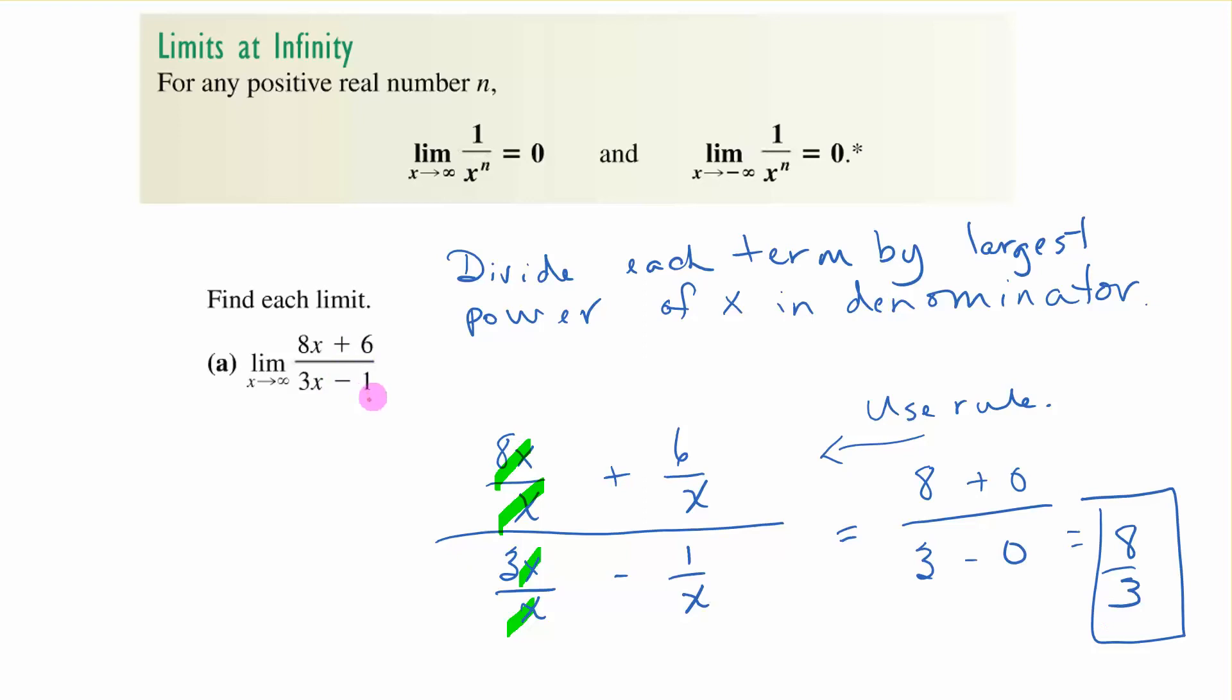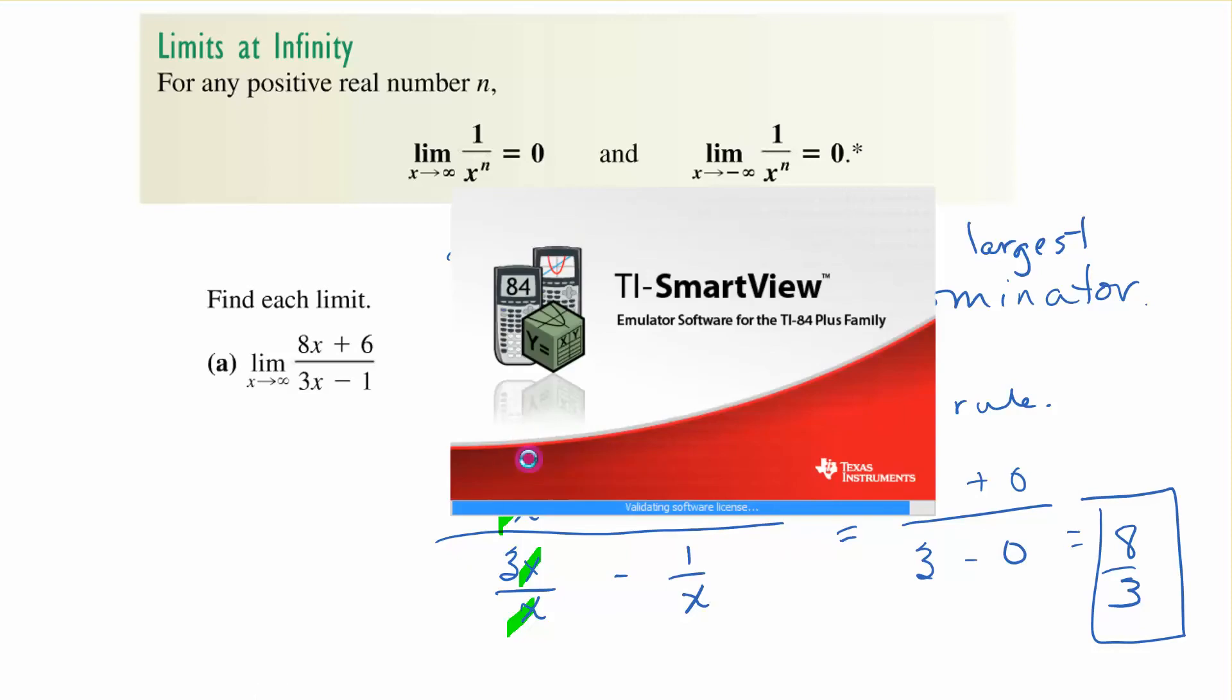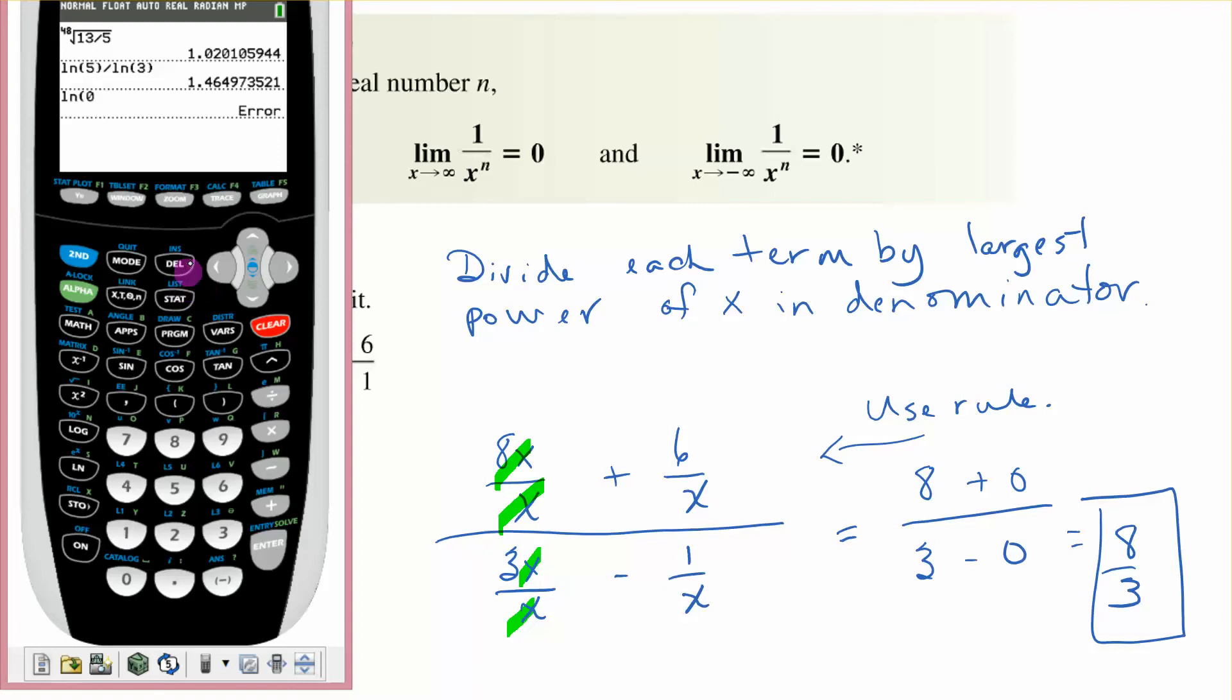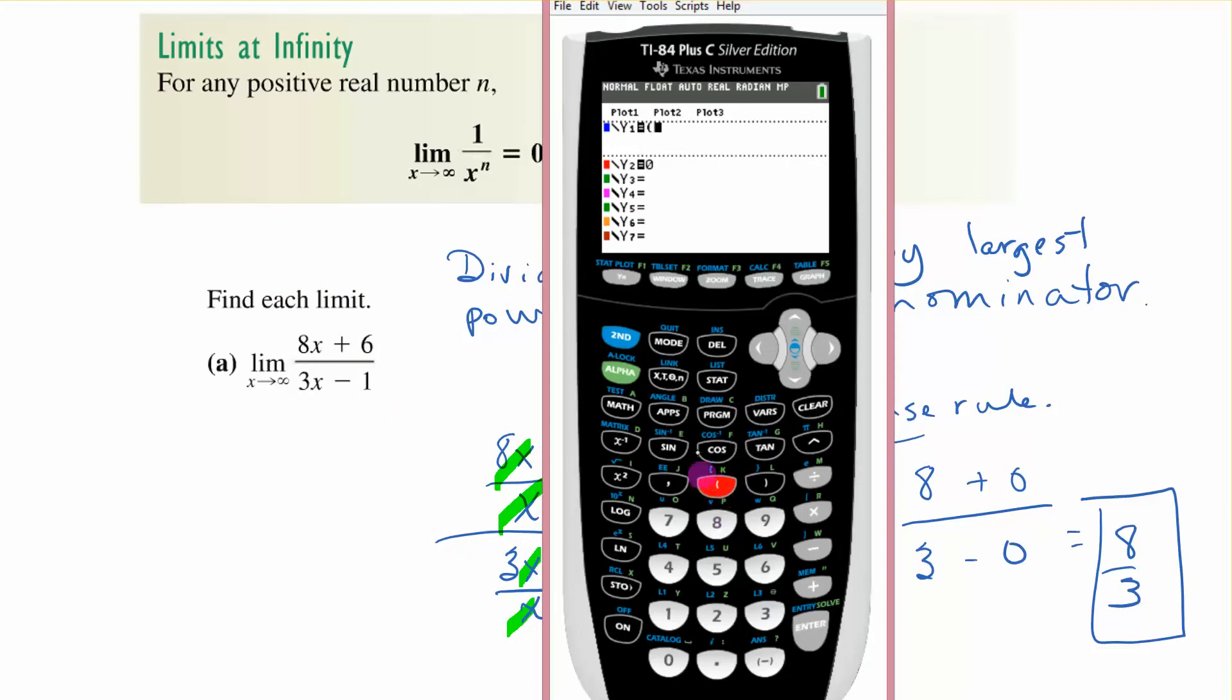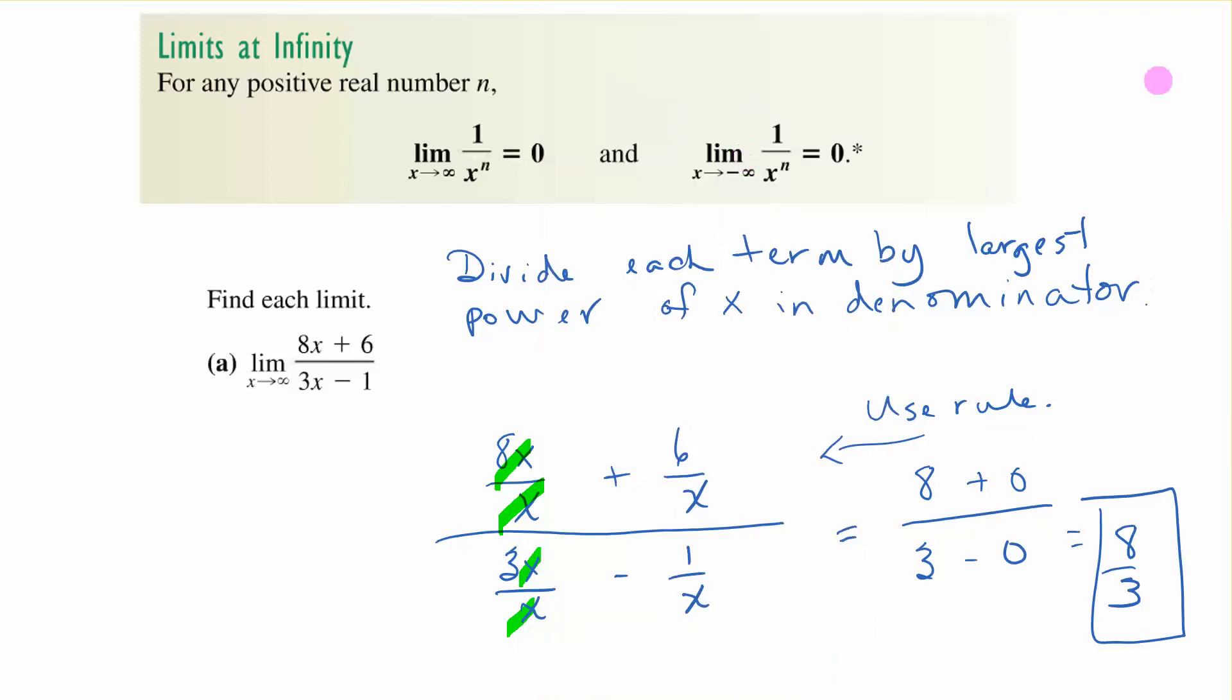If we were to put this in the calculator and look as x approached infinity it should be approaching about two and two-thirds. Let's see if we can do that just to see that. I'll have to open up the calculator. So we're going to go here to y equals and we're going to put 8x plus 6 divided by 3x minus 1.